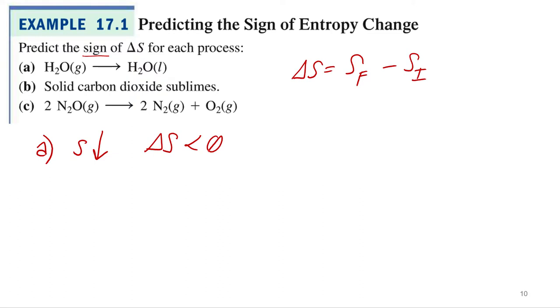And if you're ever unsure, just throw out some numbers. Okay, so we said the entropy goes down. So let's say water in the gas phase has five joules per Kelvin. And then it went down, so water in liquid phase, let's say, has one joule per Kelvin. So be final minus initial, so delta S would be one joule per Kelvin minus five joule per Kelvin equals negative four.